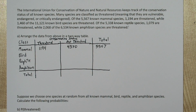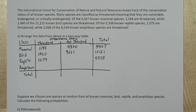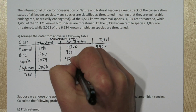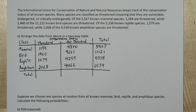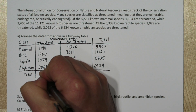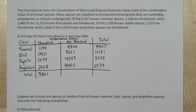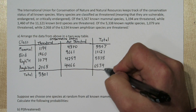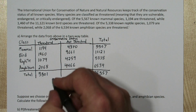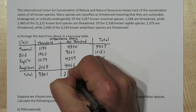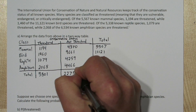Let's do this for the birds, reptiles, and amphibians as well. If we add up all the numbers in the threatened column, we get the total number of threatened species — it turns out to be 5,801. Adding up the total column tells us there are 28,557 species in our dataset, leaving 22,756 that are not threatened.